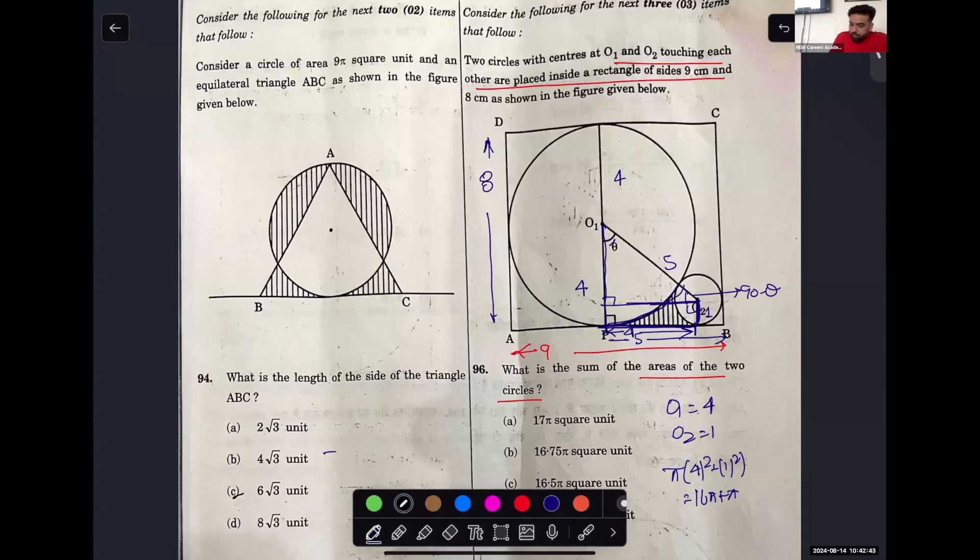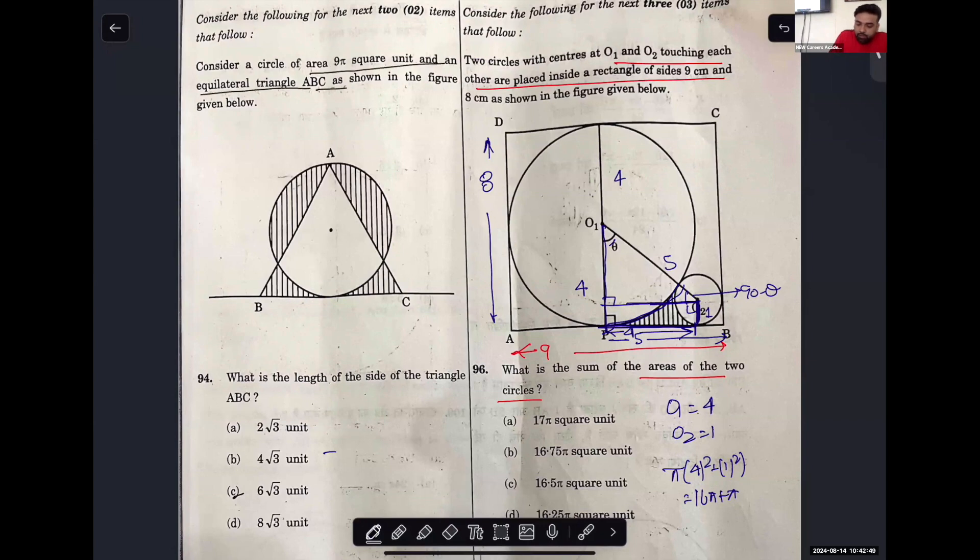The question says a circle of area 9π square units and equilateral triangle ABC are shown in the figure given below. The circle area is πr² which is 9π, so what will the radius be? 3. If the radius is 3, what will the diameter be? 6. This side has a, so what will it be? a by 2.